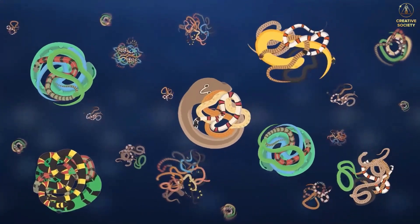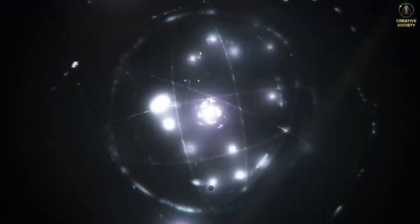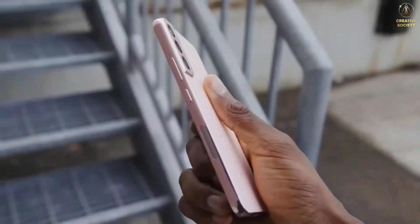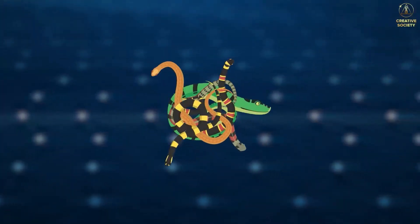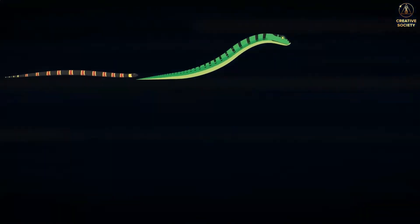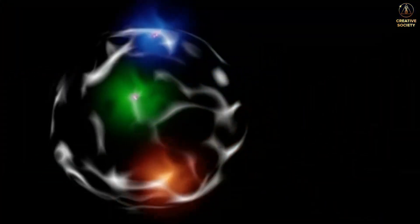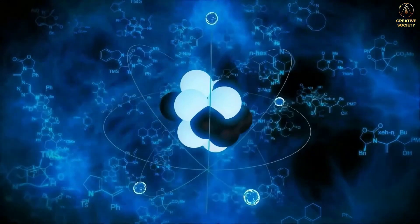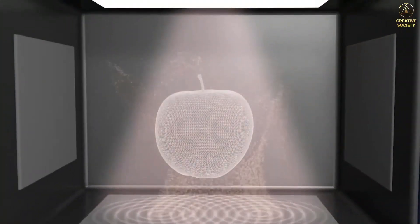Also, all material objects consist of tangles of snakes as the smallest material particles. Each snake in a tangle is a carrier of certain information, a code. Depending on the combination of snakes in a particle, one or another matter with given properties is formed in the material world.